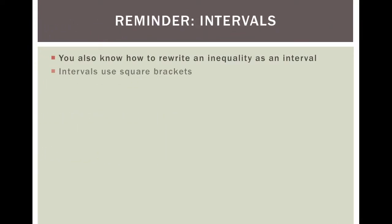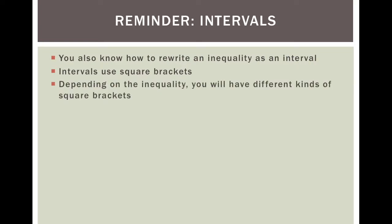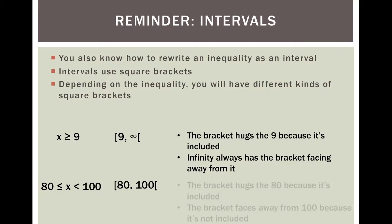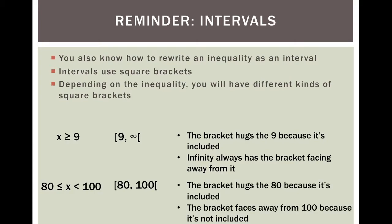You also know how to rewrite an inequality as an interval. Intervals use square brackets, and depending on the inequality, you'll have different kinds of brackets. For example, X is greater than or equal to 9: a square bracket hugs the 9 and opens away toward infinity. And for X between 80 and 100 inclusive on 80 but not 100, the bracket hugs the 80 because it's included, and opens away from 100 because it's not included.